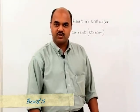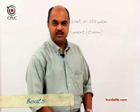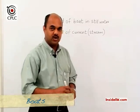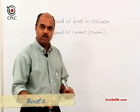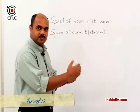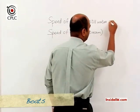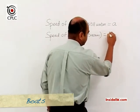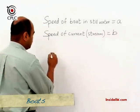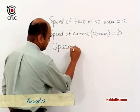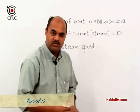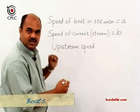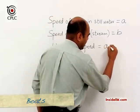Let's now look at questions pertaining to boats. We need to understand what information is given. Suppose the speed of the boat in still water is A — this is the speed at which the boat moves regardless of any current. The speed of the current by itself is B. One key term is upstream speed, which means the boat is moving against the current, so upstream speed is A minus B.